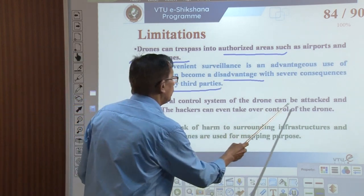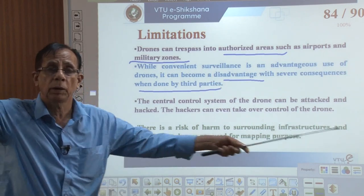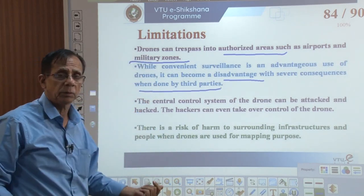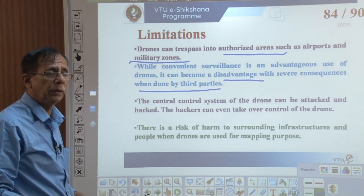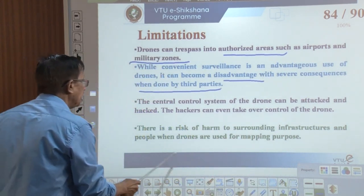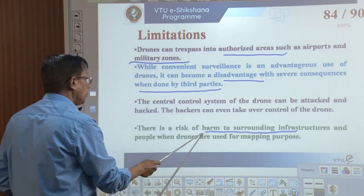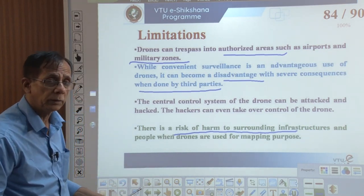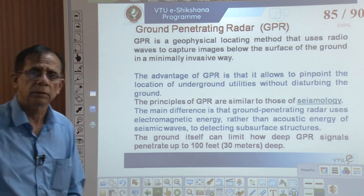The central control system of the drone can be attacked or hacked. I am capturing data from the air, but my control system is on the ground — somebody can damage my entire data system or hack it, making it difficult to control the information, which can be leaked. There is also a risk of harm to surrounding infrastructure and people when drones are used for mapping. Drones can get damaged or hit high-rise buildings, and either the drone or the infrastructure gets affected.